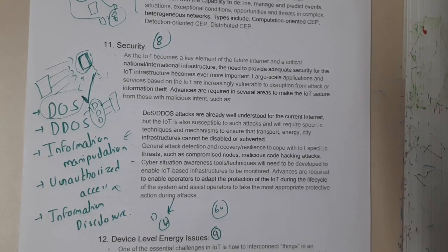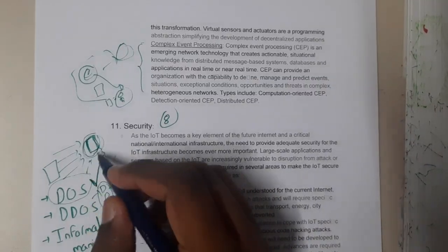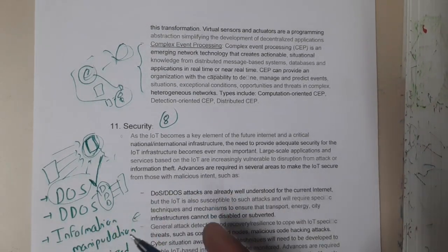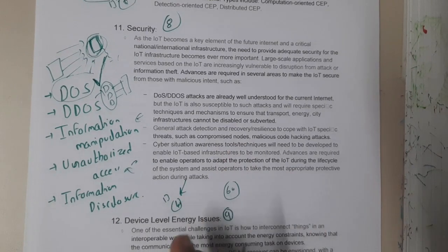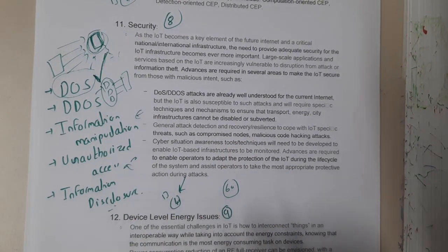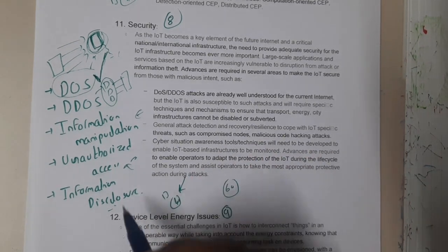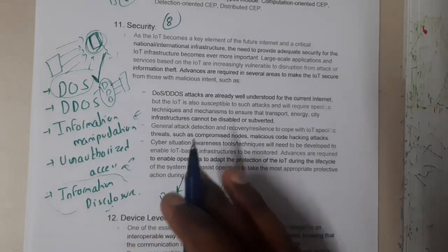Similarly, unauthorized access — assume I do not even have the right to collect data from your sensor, but I connect anyway and collect the data. This is unauthorized access. Similarly, information disclosure: some sensor values are really sensitive and should not be leaked outside, but those sensor data could also be leaked through security vulnerabilities.